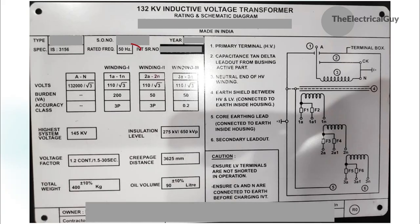Moving on, next is frequency, which is 50Hz. Frequency could be different for different countries. Then the IVT serial number — this is the serial number of the IVT and it is mandatory to include on the nameplate as per the standards.